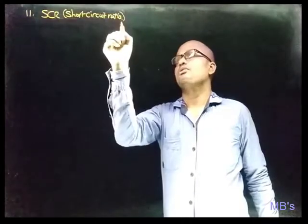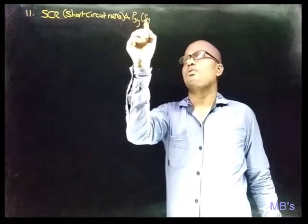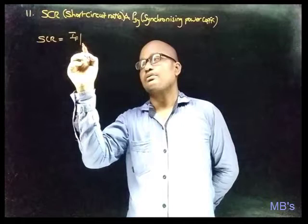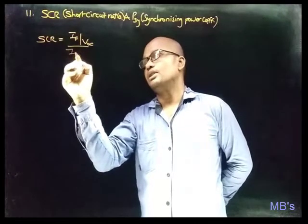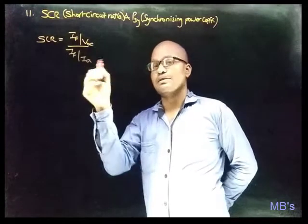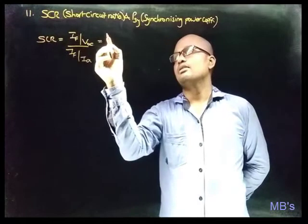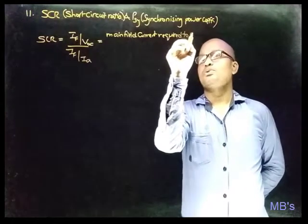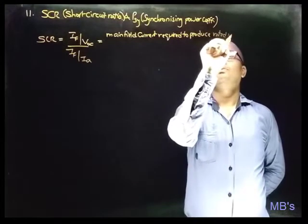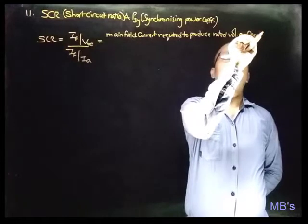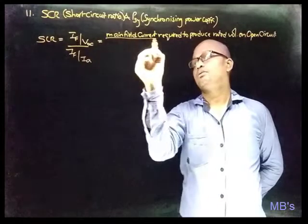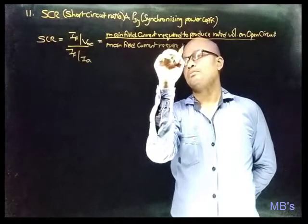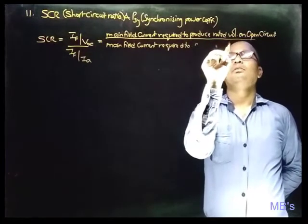The next important topic is the short circuit ratio and synchronizing power coefficient. Simply, the short circuit ratio is the ratio of field currents: the field current required to produce rated open circuit voltage, and the field current required to produce rated armature current on short circuit. It is defined as the main field current required to produce rated voltage on open circuit to the main field current required to produce rated armature current on short circuit.